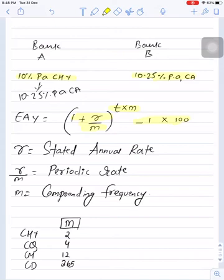Where R is stated annual rate. So in this example stated annual rate is 10%. R upon M is periodic rate, this means rate of interest for 6 months as the situation is compounding half yearly. So periodic rate is 5% and M stands for compounding frequency. So in this case the value of M will be 2.